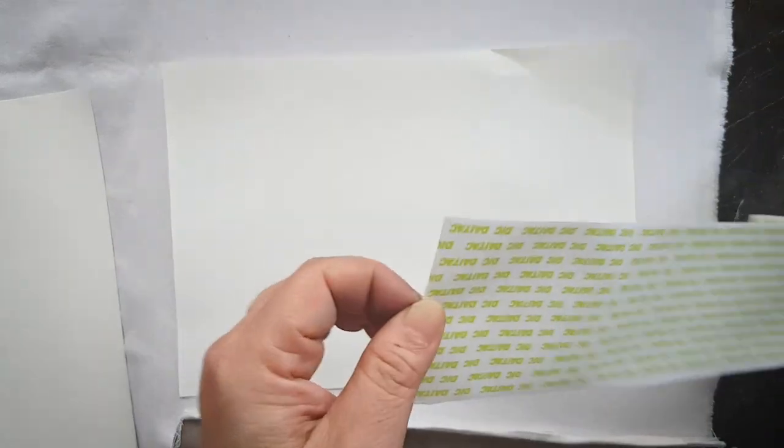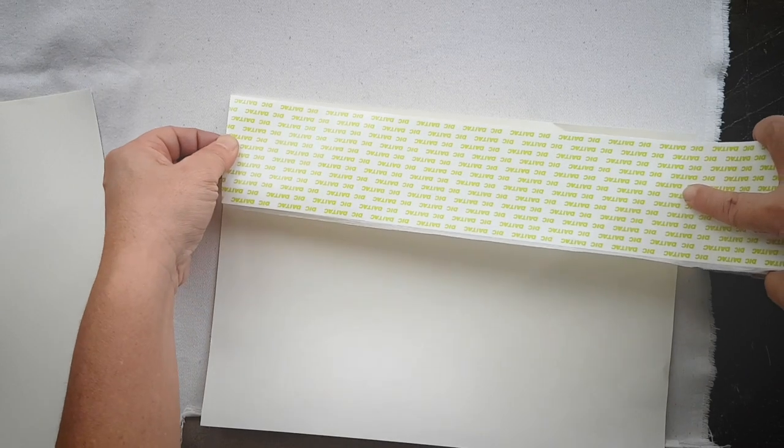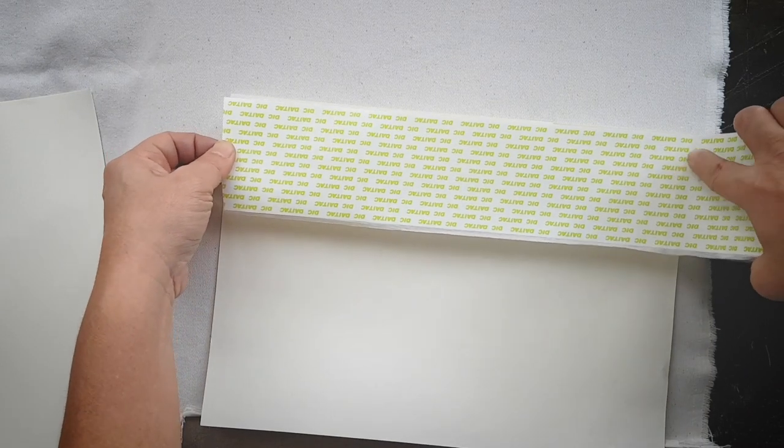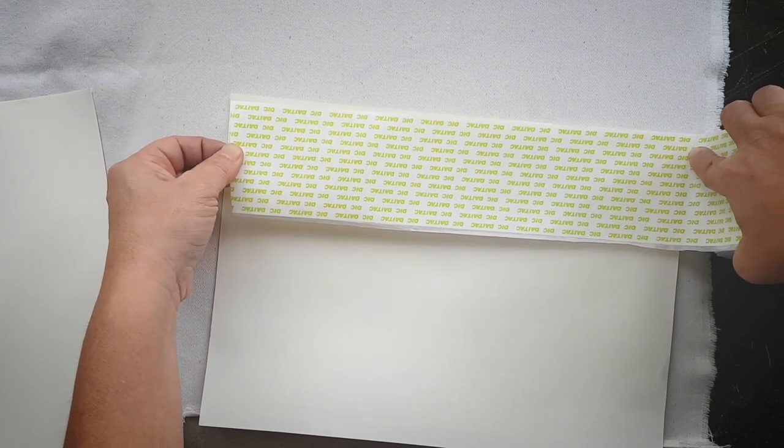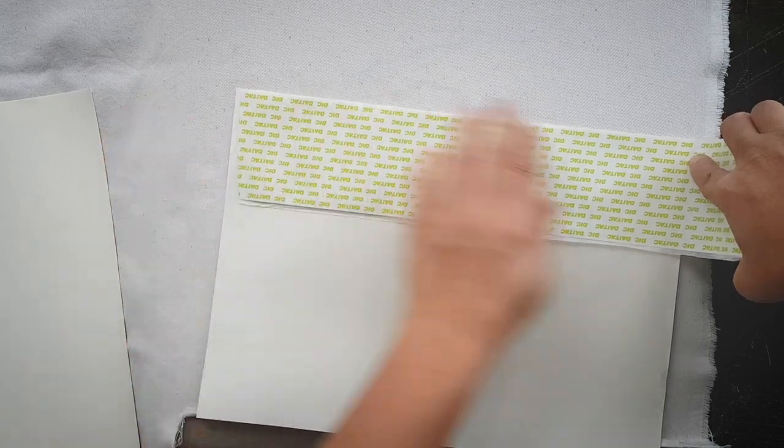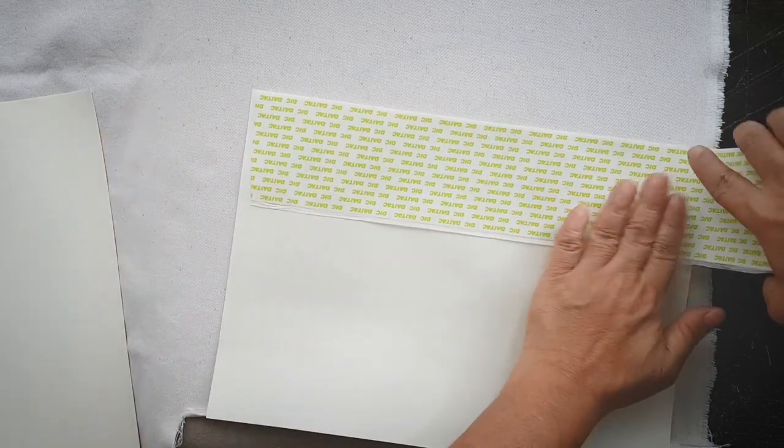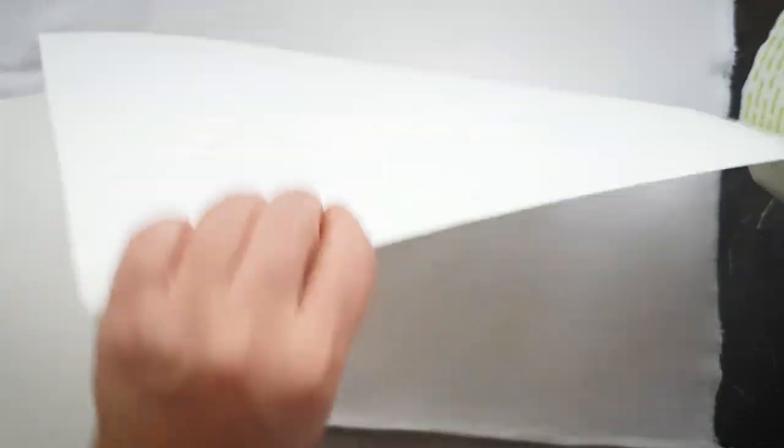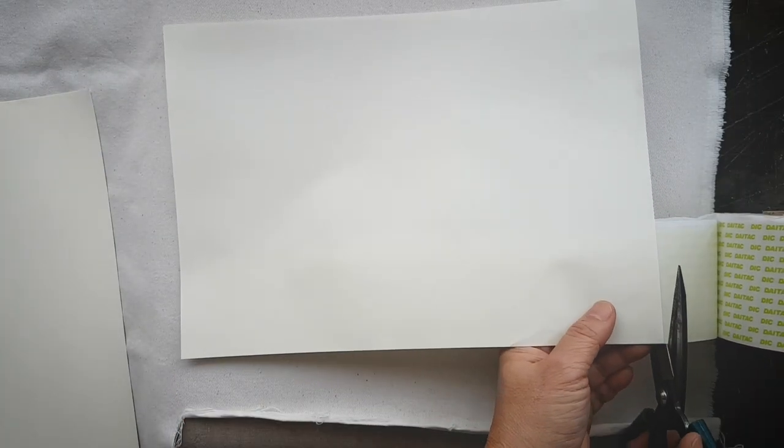Next we are going to prepare the printer paper. My printer paper is A4 size and I'm going to cover it up with double-sided sticky tape. So this sticky tape is used for sticking down carpets, so they are extra sticky.